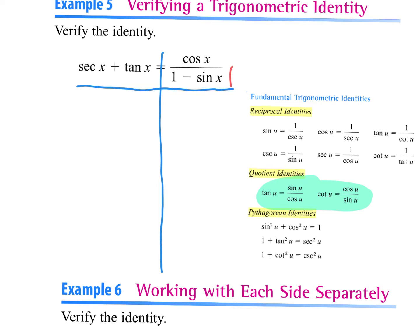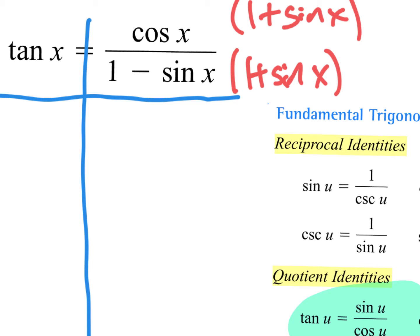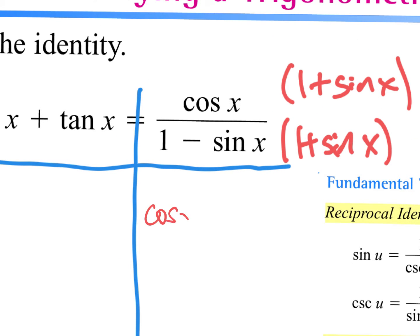Multiply by the conjugate. I'm going to multiply by the one plus, because what that's going to do is create a Pythagorean identity. What you do to the bottom, you do to the top. So on the top here, some of you did this yesterday and multiplied the cosine into both — you can do that. I'm just going to write them together. I'm not going to actually FOIL it in. If you did FOIL it in, that's fine — you're going to have to end up taking it apart anyway.